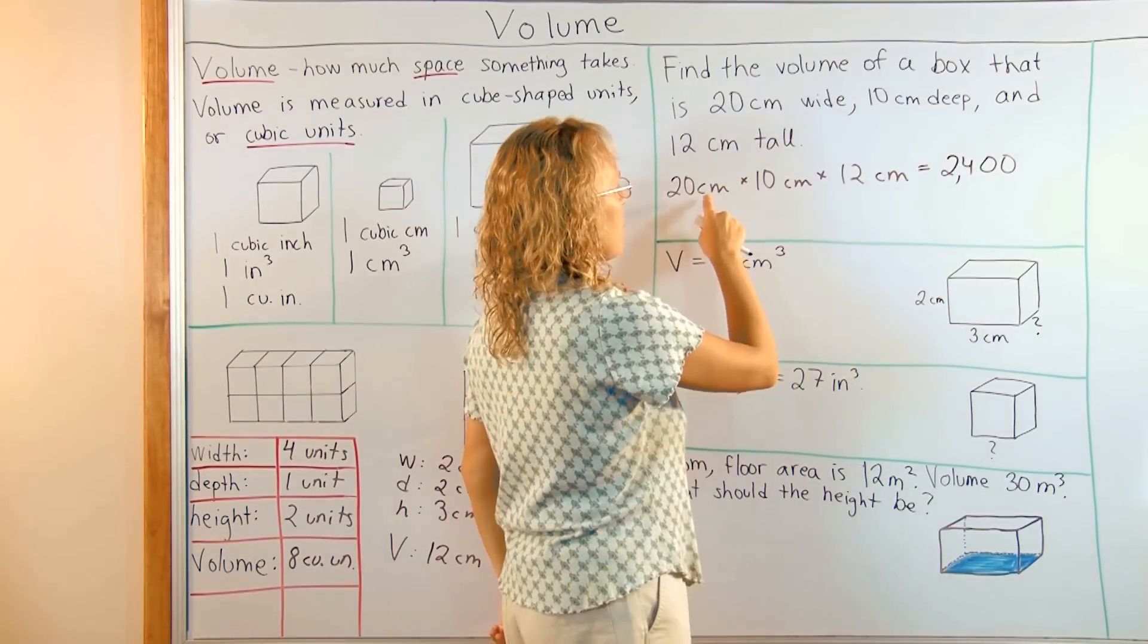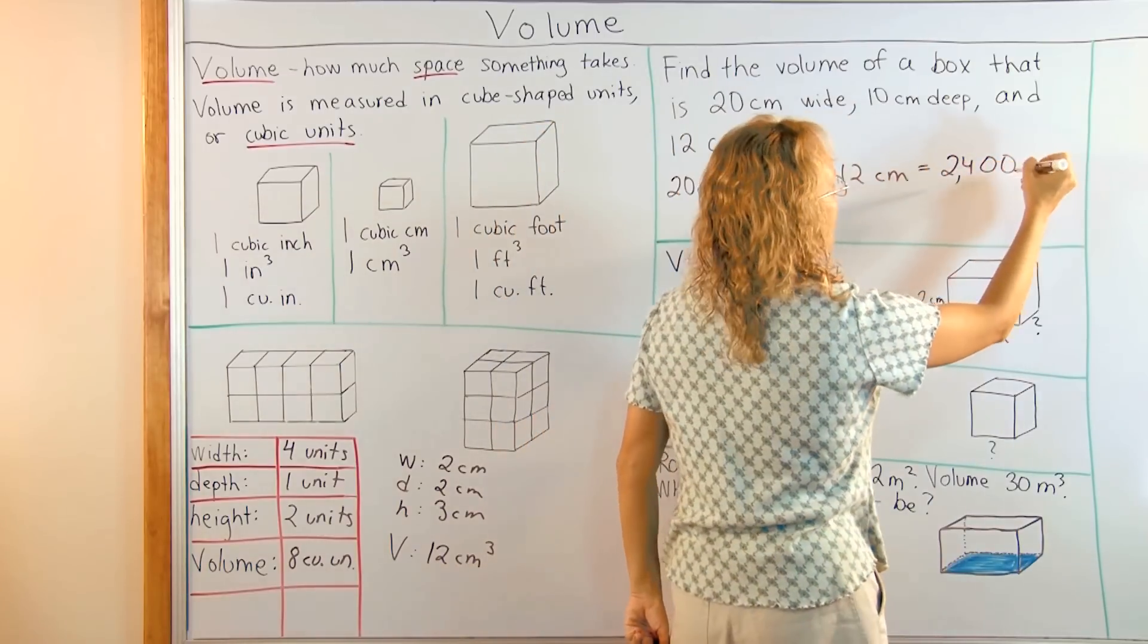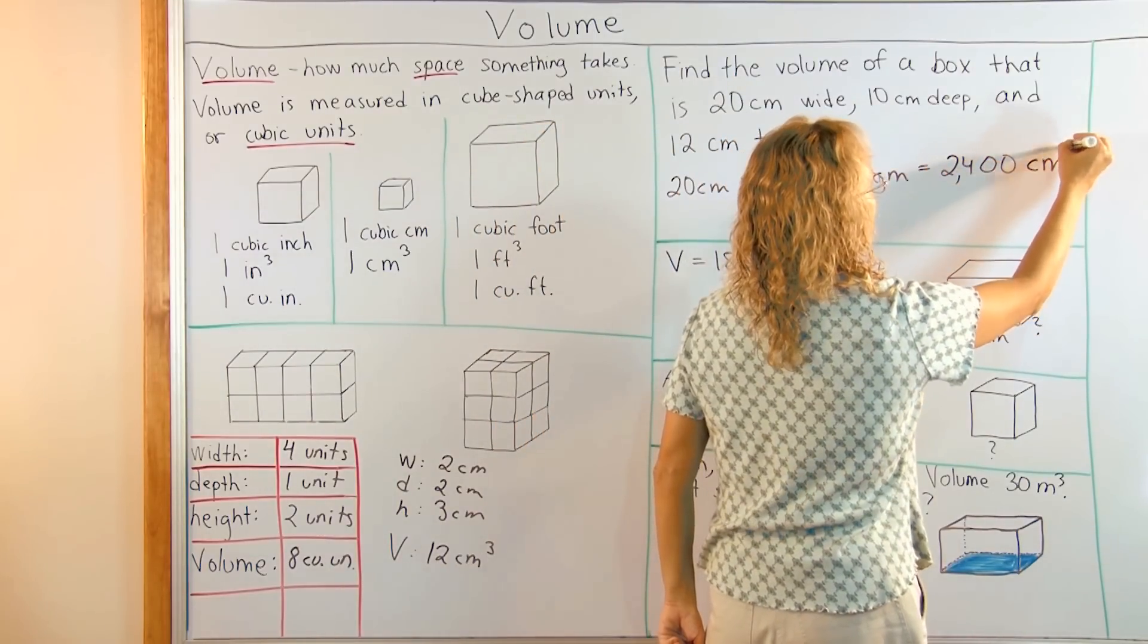So two thousand four hundred. And then our centimeter got multiplied by itself three times. So we get the cubic centimeters here. You know, centimeter cubed like that.